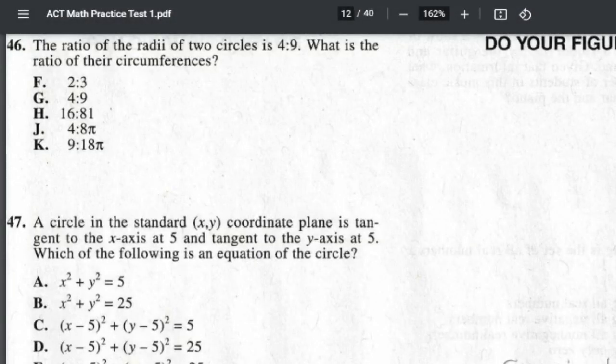Number 46: The ratio of the radii of two circles is 4 to 9. What is the ratio of their circumferences?